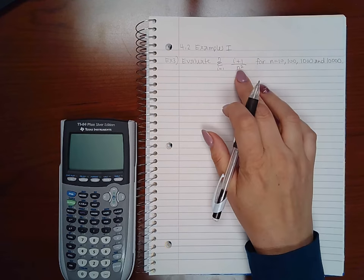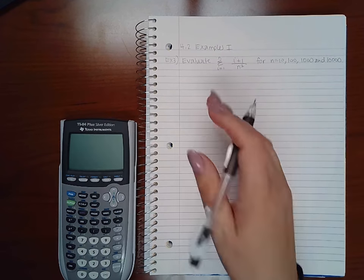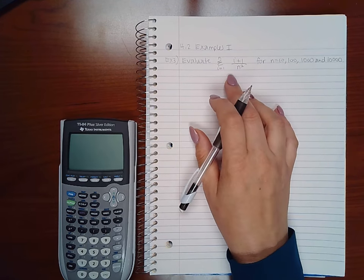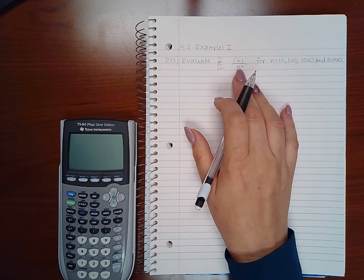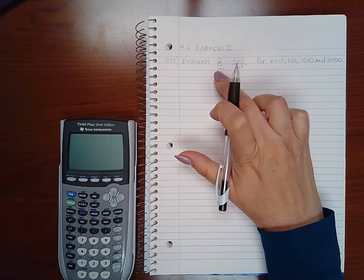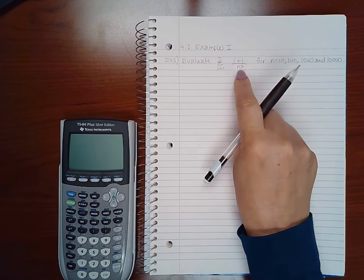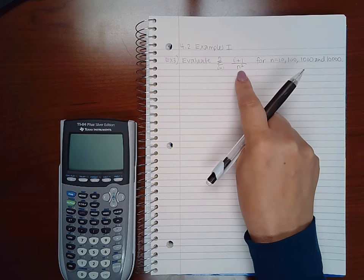So what we want to do is we first want to apply our summation formulas. Now we do have a summation formula that says if we have a constant or a function that is not of this variable, you can take it out of the summation. So since n is just a constant, once I know what n is, this is just going to be a number.